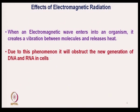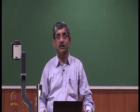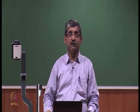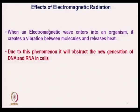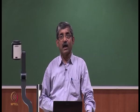For a shield to be effective, we must block this propagation — both electric and magnetic fields in any combination they appear. When an electromagnetic wave enters into an organism, it creates vibration in the molecules. As the molecules vibrate, they release heat, and this electromagnetic wave-induced heat obstructs the new generation of DNA and RNA cells — the DNA and RNA molecules are actually obstructed.